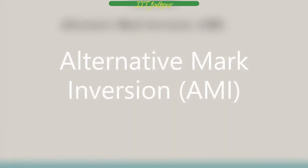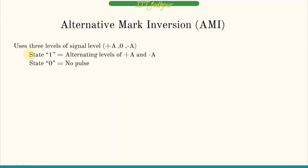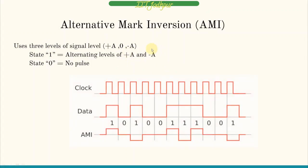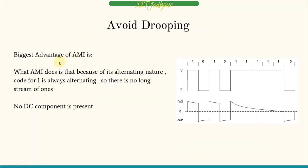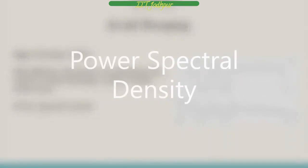The last type is AMI — alternate mark inversion. It uses three states: +A, 0, and −A. State zero represents no pulse. Whenever a one is encountered, it alternates between +A and −A — first one gives +A, next one gives −A, then +A again, always alternating. For zero, it always remains zero. The biggest advantage is that because of its alternating nature, there is never a long string of ones, so drooping is avoided and no DC component is present.